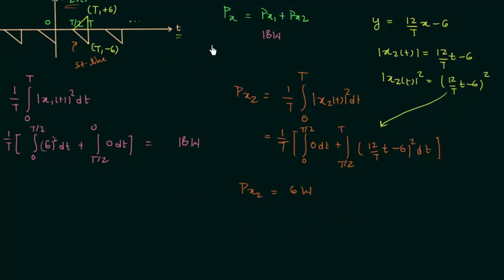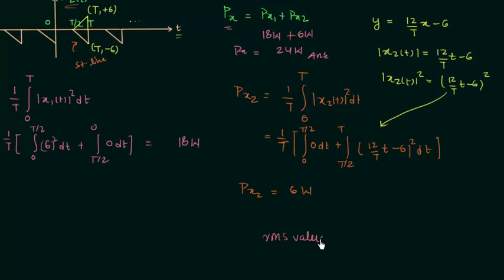The total average power is Px1 plus Px2, which equals 18 + 6 = 24 watts. The RMS value is equal to the square root of 24, which simplifies to 2√6. This is the final answer.